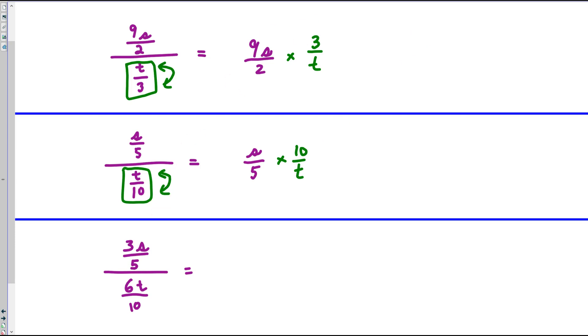Finally, in the last case, we have this thing on top, 3s over 5, and instead of dividing by this fraction, we multiply again by its reciprocal. We switch the numerator and denominator and multiply by its reciprocal.